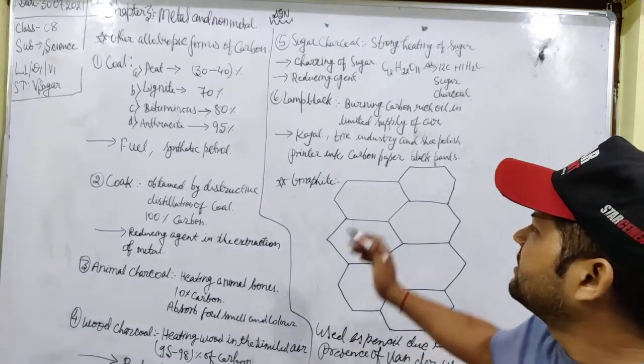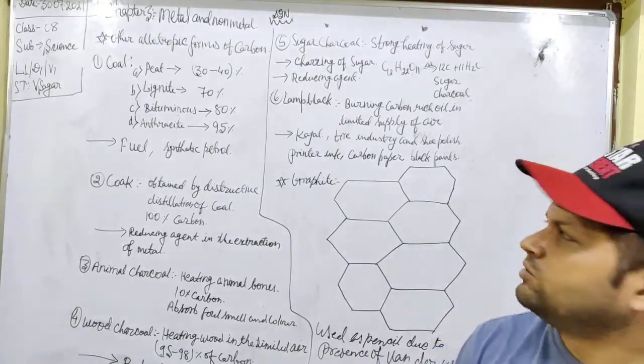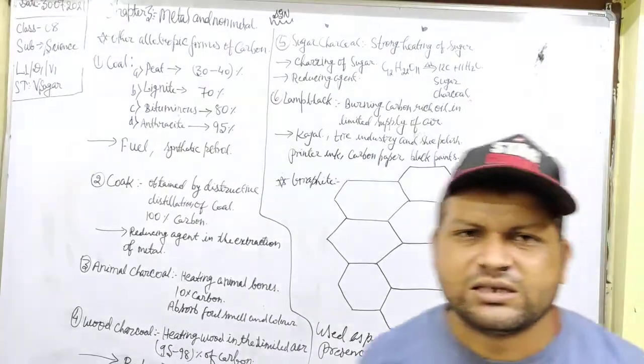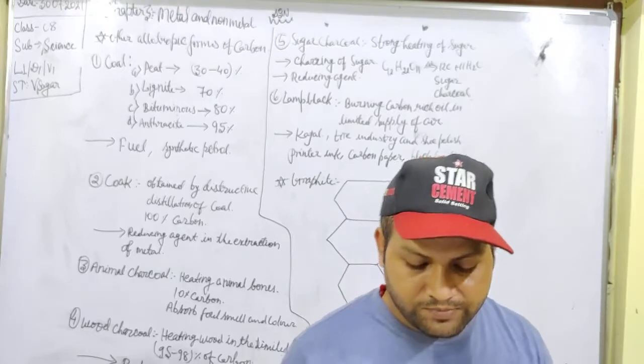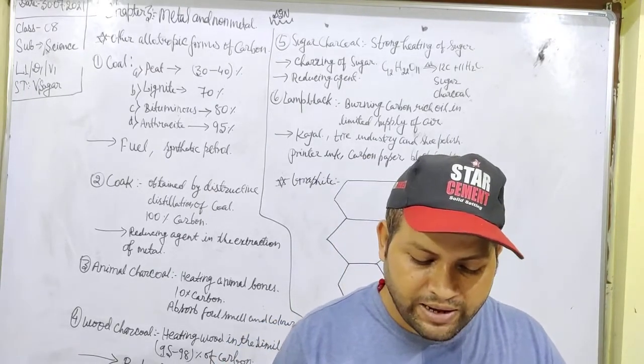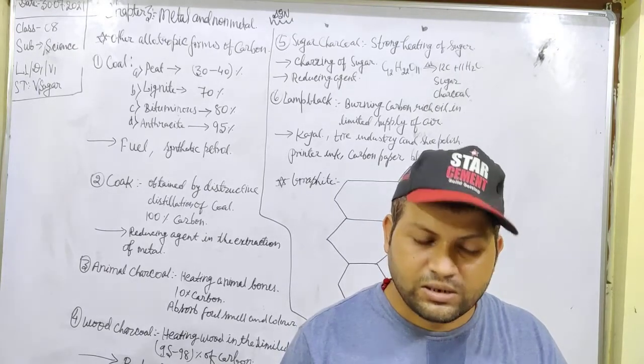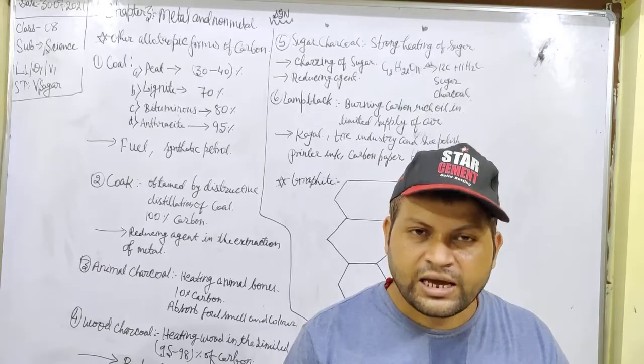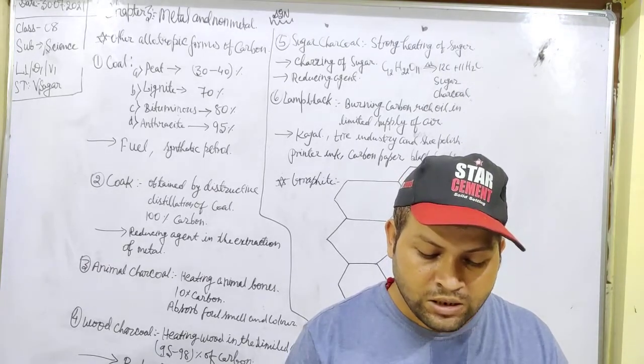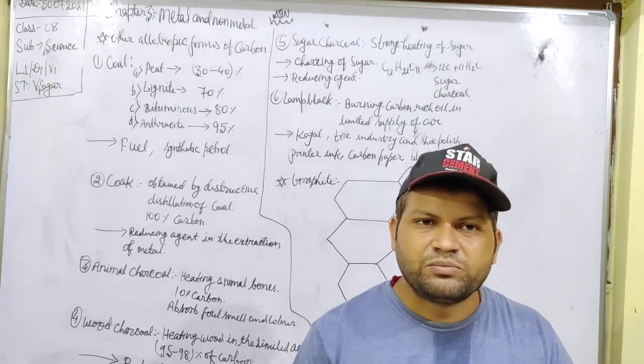And now, lamp black. Lamp black is another form of carbon, an allotropic form of carbon. It is obtained from the burning of carbon-based oil in the limited supply of air. And in homes, candle soot is obtained by depositing the soot on the metal sheet by burning vegetable oil.